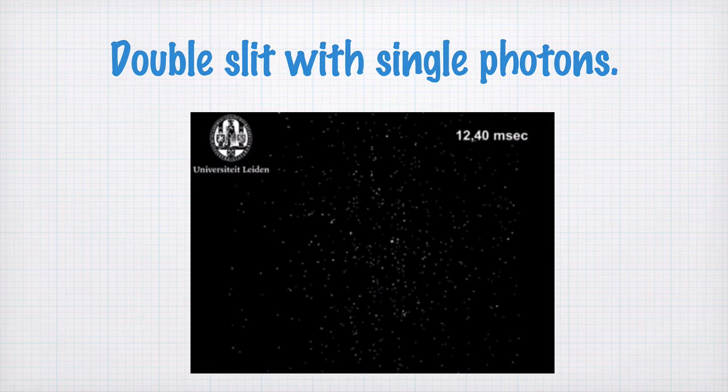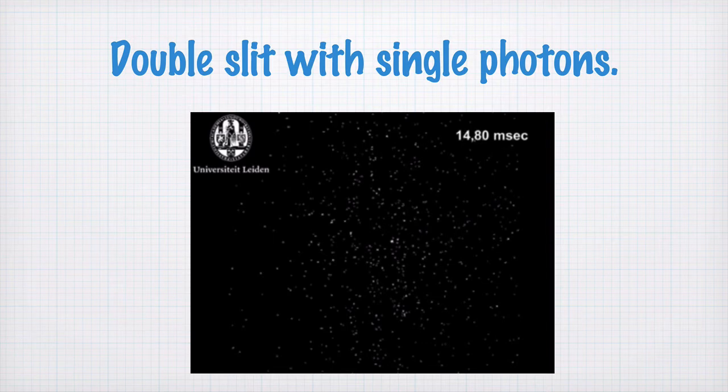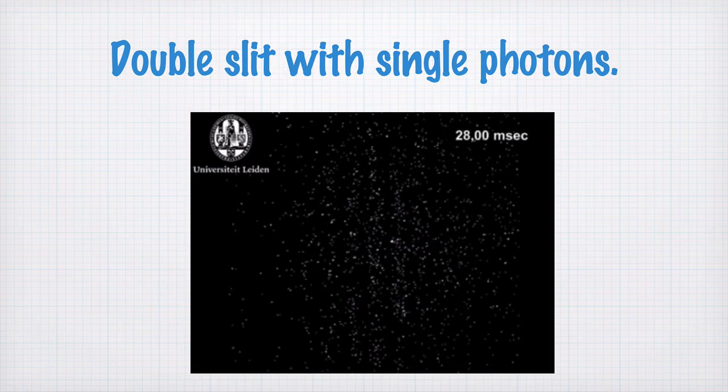So you might imagine the photon has to go through one slit or the other. But according to quantum mechanics, the single photon is also a wave and so it passes through both slits at the same time. And because it's going through both slits, we see an interference pattern.